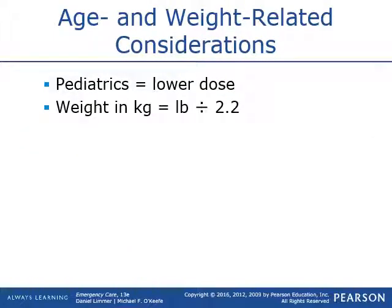Things to consider when giving medications are age and weight. Pediatric patients generally don't require as much of a dose as adults, so protocols will have two different doses depending on the patient's age. Also, if they weigh more, sometimes they need more medication. All medications will be administered based on weight in kilograms. To figure out a patient's weight in kilograms, take their weight in pounds and divide by 2.2. So a 220-pound patient weighs 100 kilos.